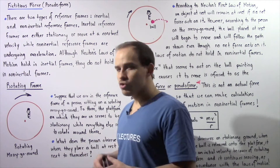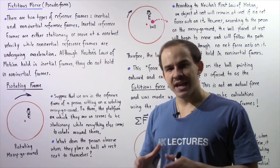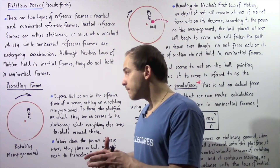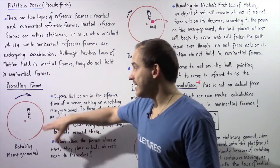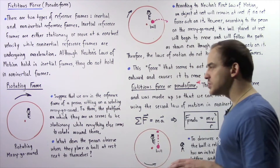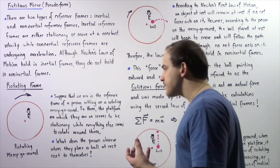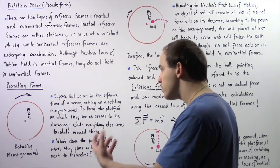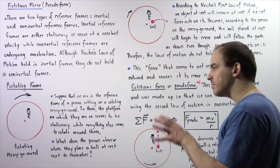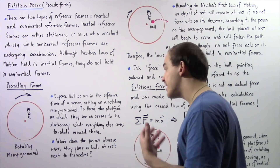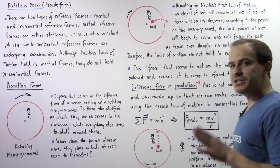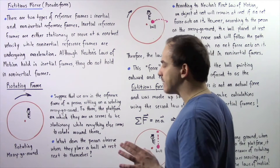Let's suppose we examine a rotating merry-go-round — a rotating flat disk — and an observer or person is sitting on that rotating merry-go-round. Now let's suppose that we are in the reference frame of that person. To that person, the platform on which they are sitting seems to be stationary while everything else seems to rotate around them.